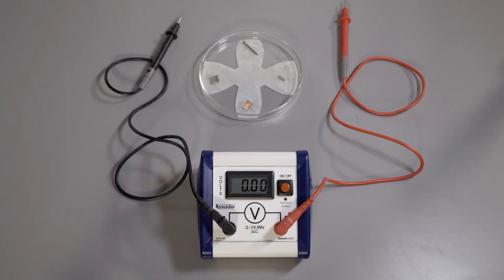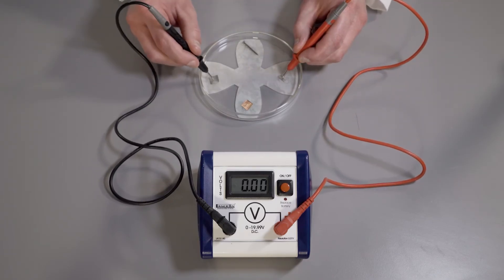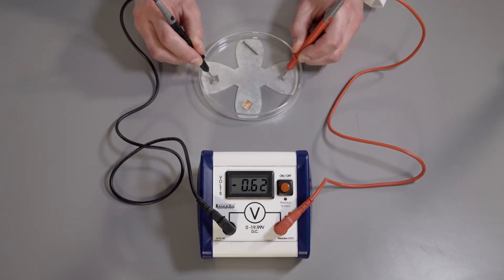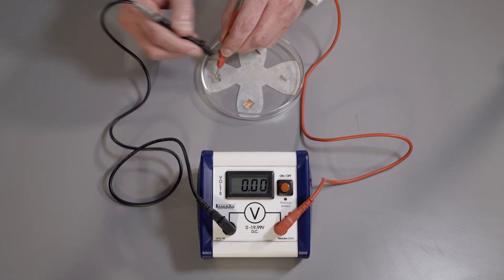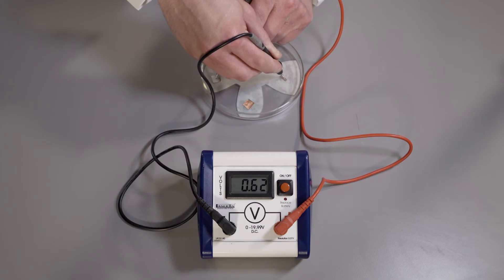Now we can set about measuring the other combinations of half cells, first zinc and magnesium. If we get a negative reading, we simply swap over the connections to get the positive value. Record the potential difference and which metal was connected to the negative terminal and which to the positive terminal to give a positive value.